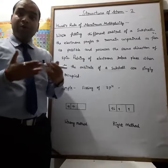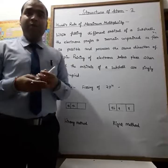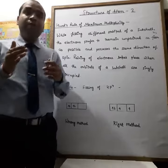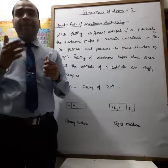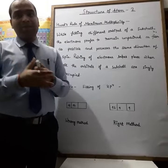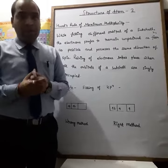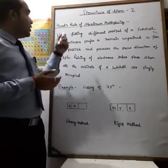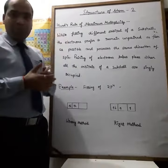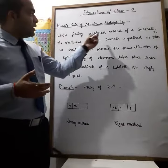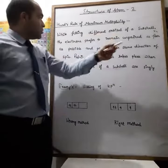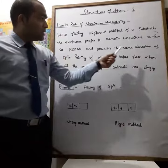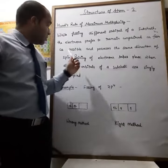Today we will discuss Hund's Rule of Maximum Multiplicity. This rule is for filling electrons in the various orbitals. We know that an atomic orbital can accommodate a maximum of 2 electrons. The rule states that while filling different orbitals of a subshell, electrons prefer to remain unpaired as far as possible, with spins in the same direction.